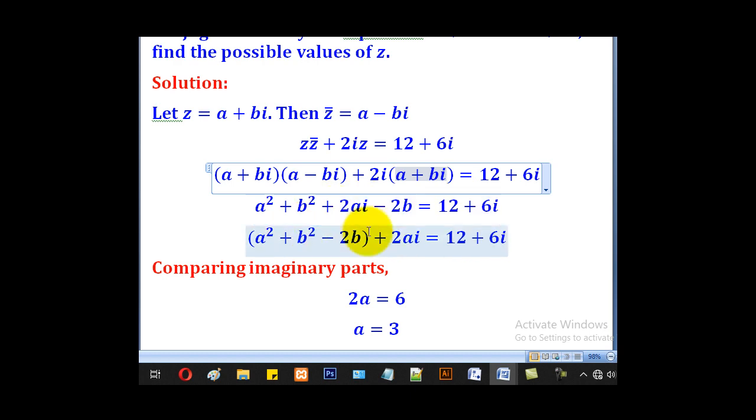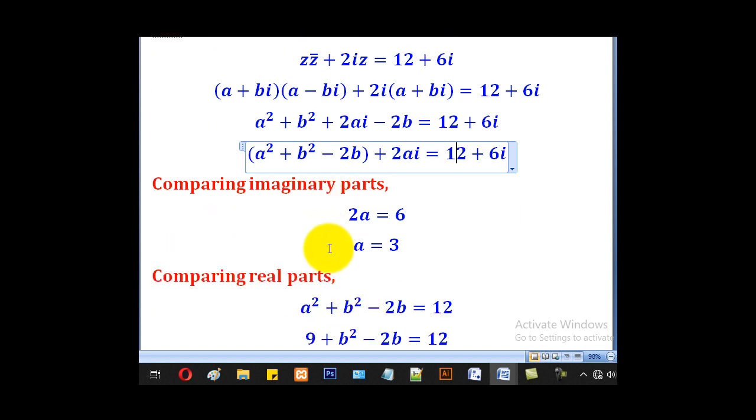When you collect like terms on the left-hand side, the real part will be A squared plus B squared minus 2B, and the imaginary part will be 2a. For the right-hand side, it will be 12 plus 6i.